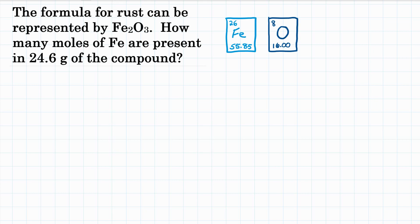All right everyone, the formula for rust can be represented by Fe2O3. How many moles of Fe are present in 24.6 grams of the compound? So we want to know the moles of iron, only Fe, only iron.